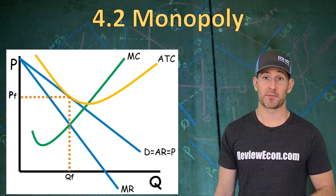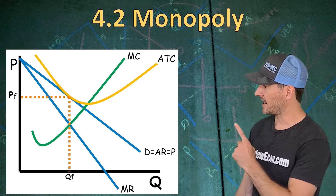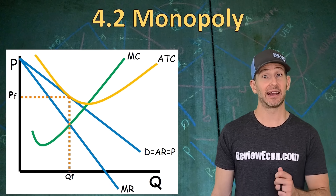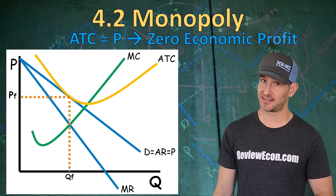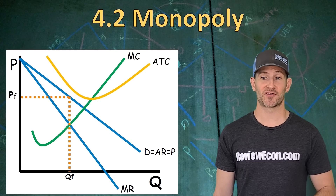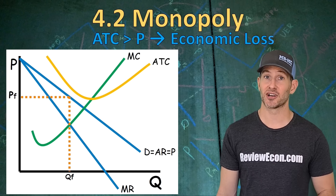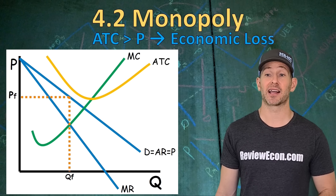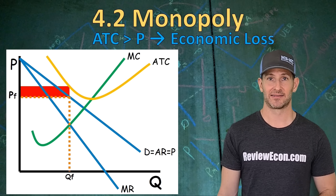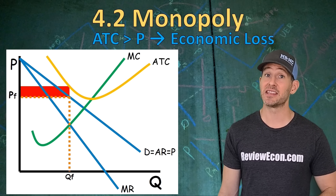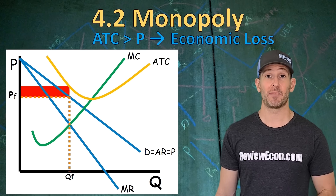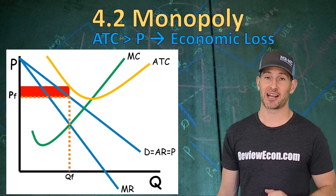If this firm is earning zero economic profit or breaking even, that average total cost curve will be tangent to the demand curve at the profit maximizing quantity — the average total cost equals the price, that's zero economic profit. If that average total cost curve is a little bit higher, now this firm is earning economic losses because that average total cost curve is greater than the price. That means economic loss, and we can find that economic loss with that box right there. Calculate the area of it and that would give you the amount of economic loss.